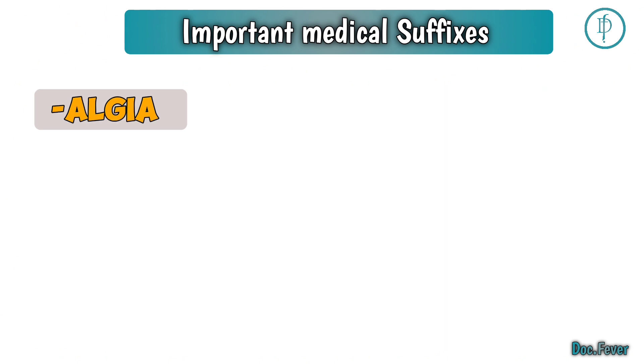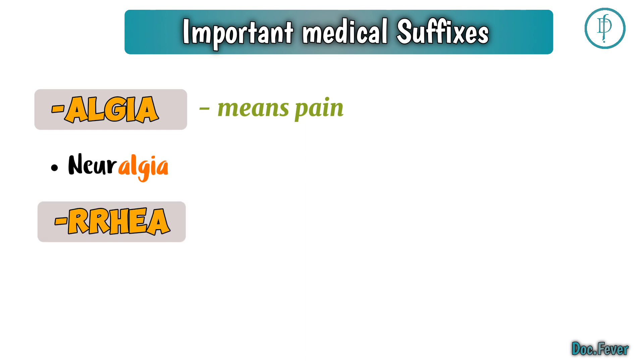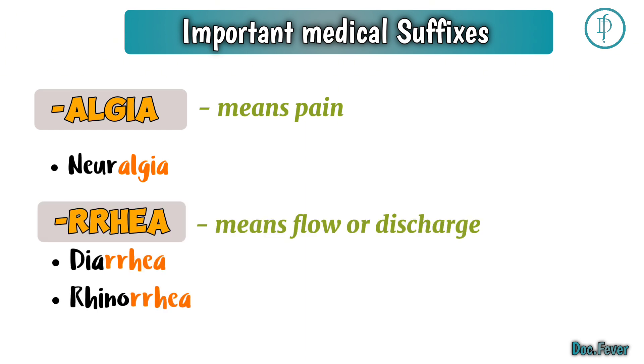Algia is a suffix which means pain. For example, neuralgia. Rrhea is a suffix which means flow or discharge. For example, diarrhea and rhinorrhea.